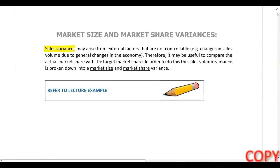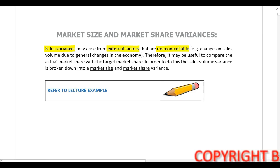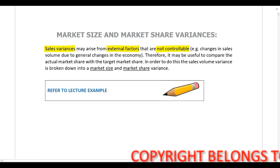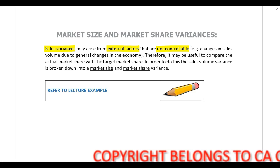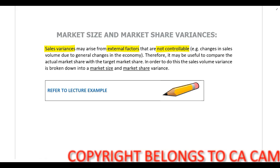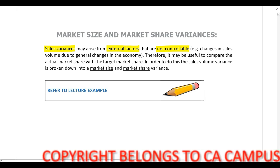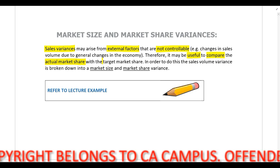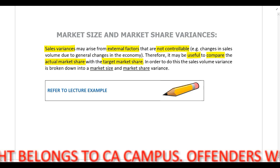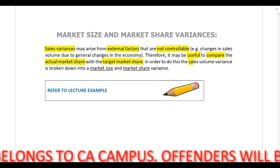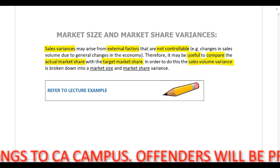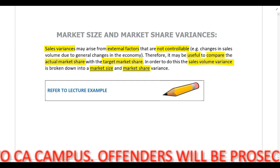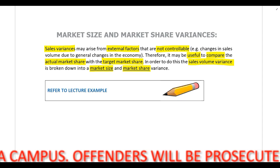Sales variances can also arise from external factors that are not controllable. For example, there might be changes in sales volume because of general changes in the economy, and that's obviously not under the control of the company. So if you have a situation like this, it might be useful to compare the actual market share with the target market share. In order to do this, we need to split the sales volume variance into a market size and a market share variance.